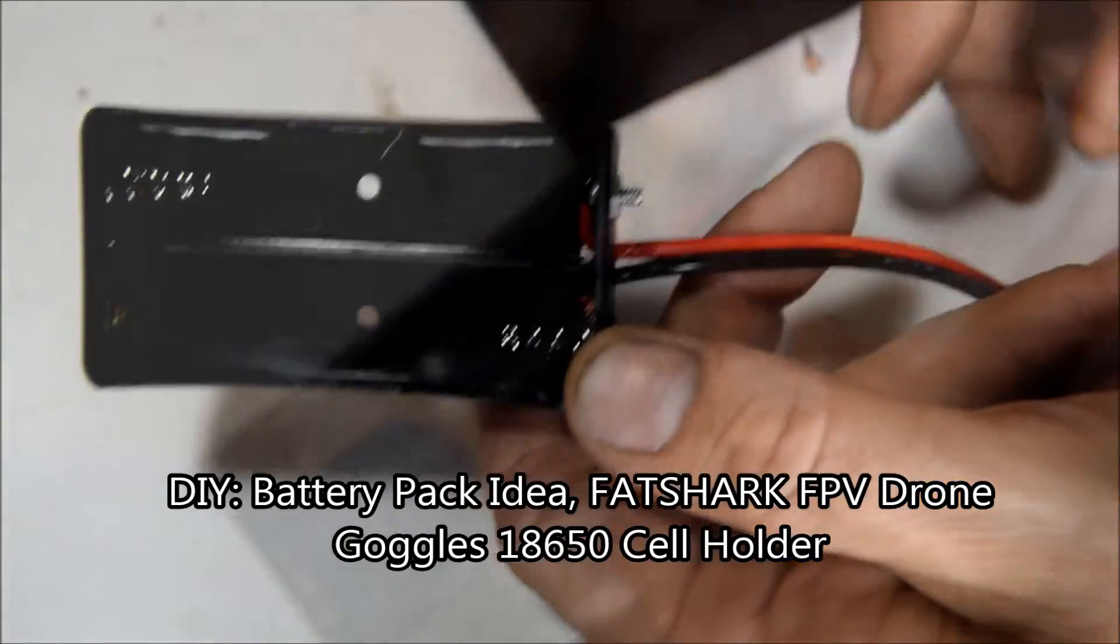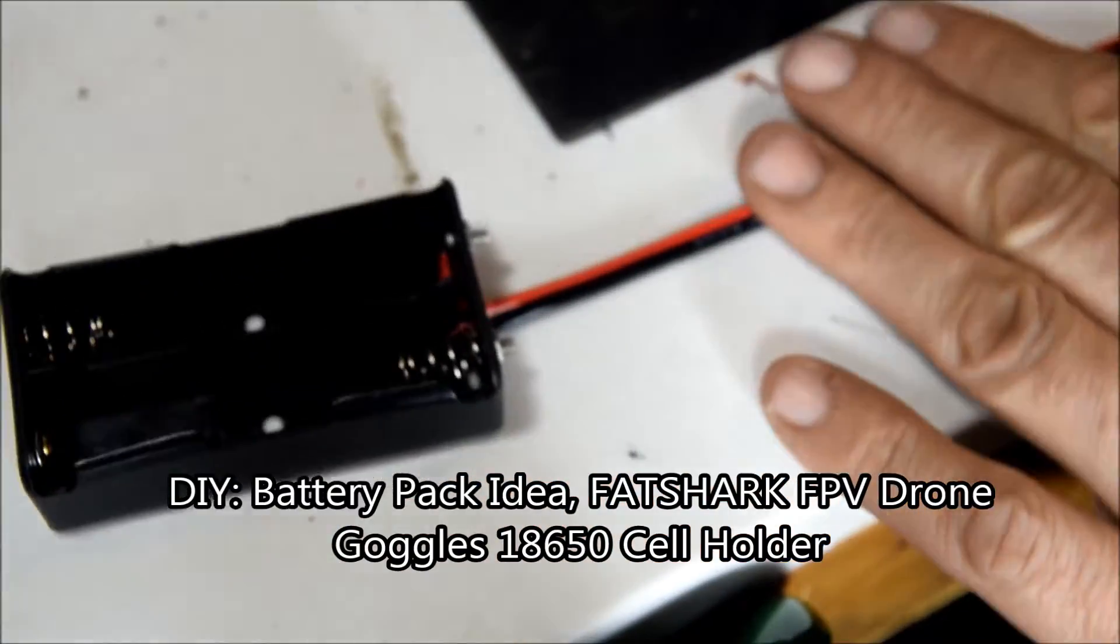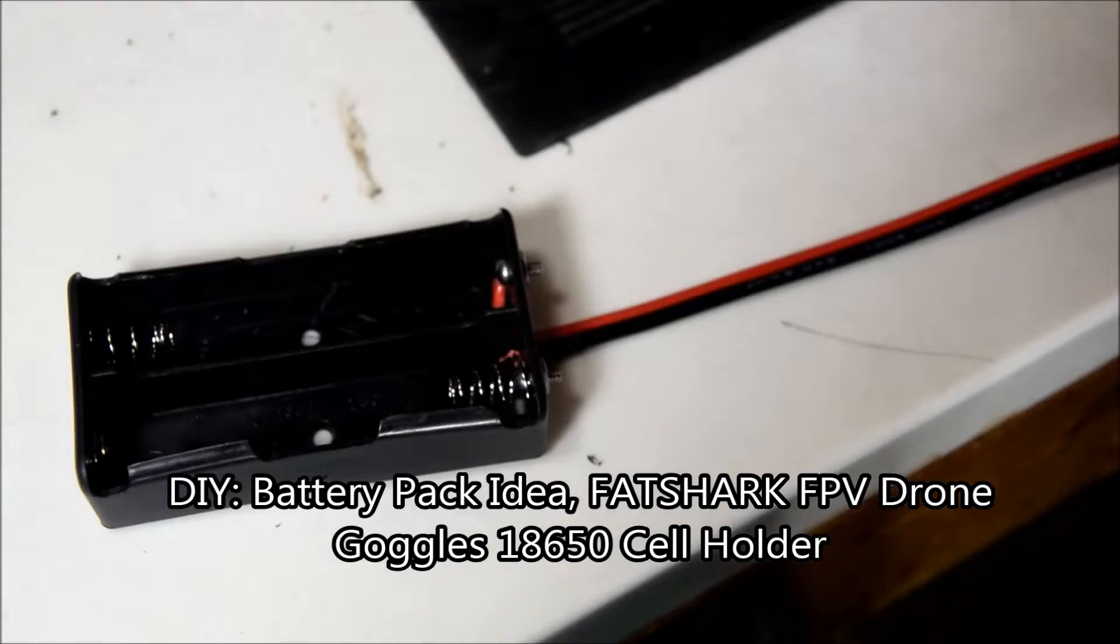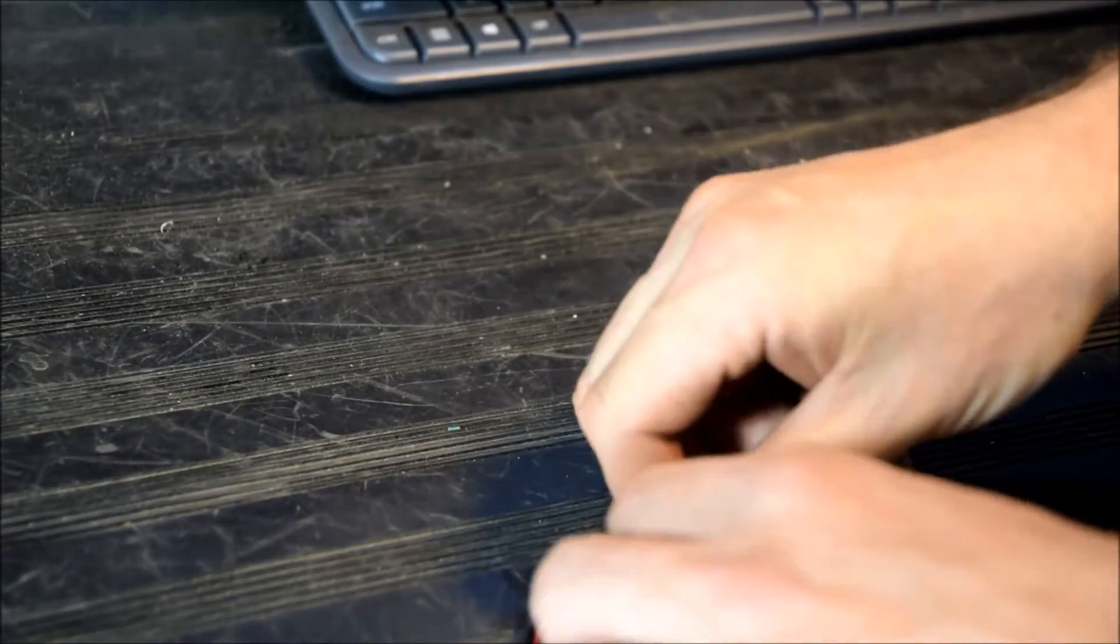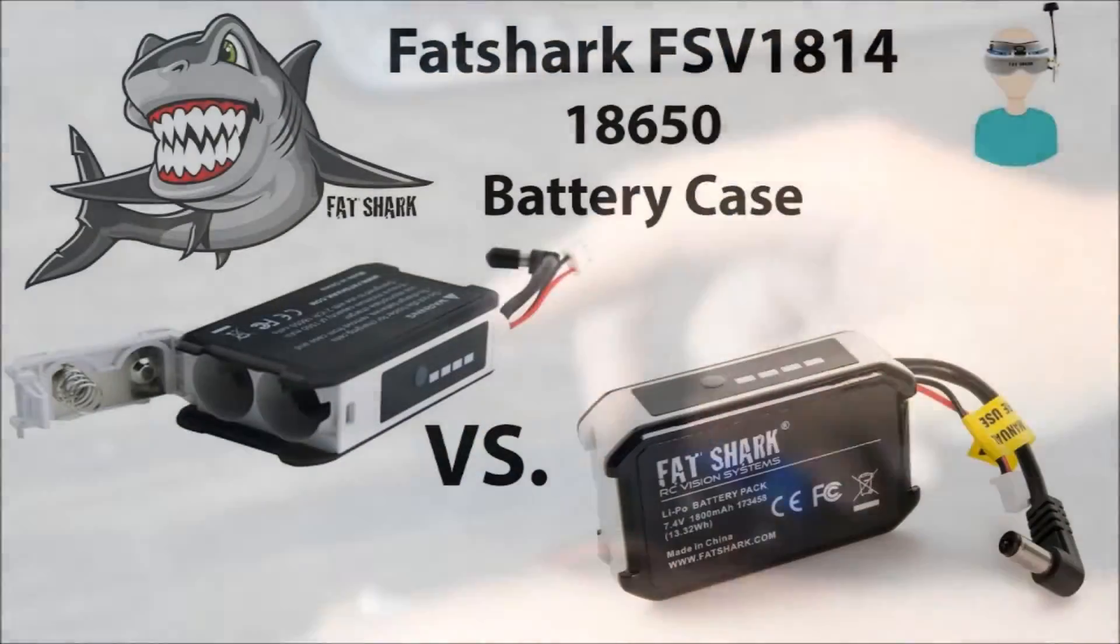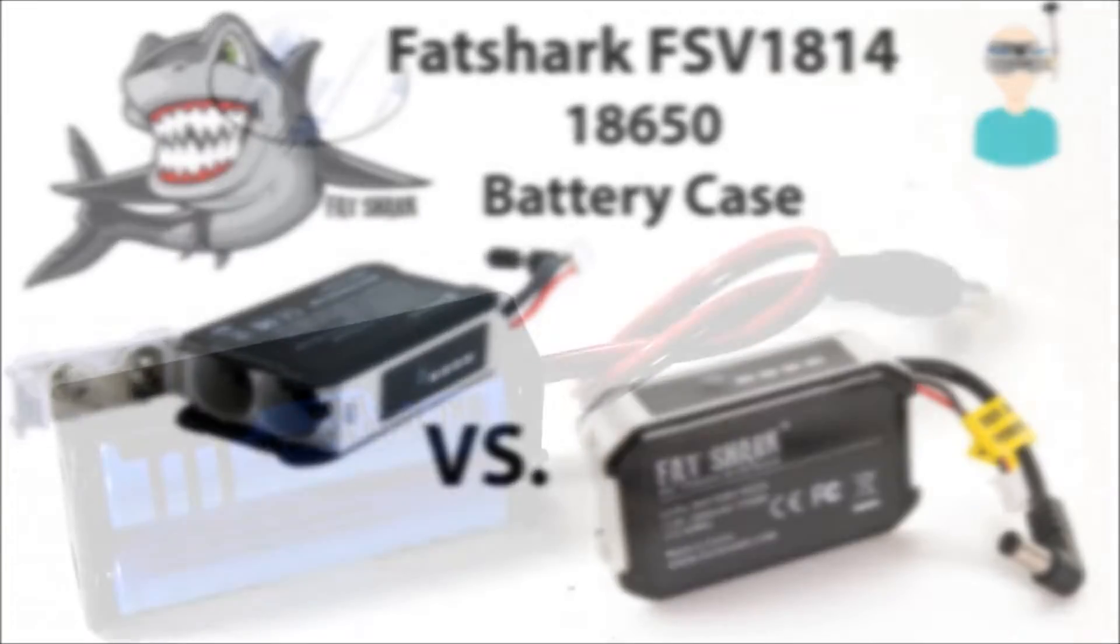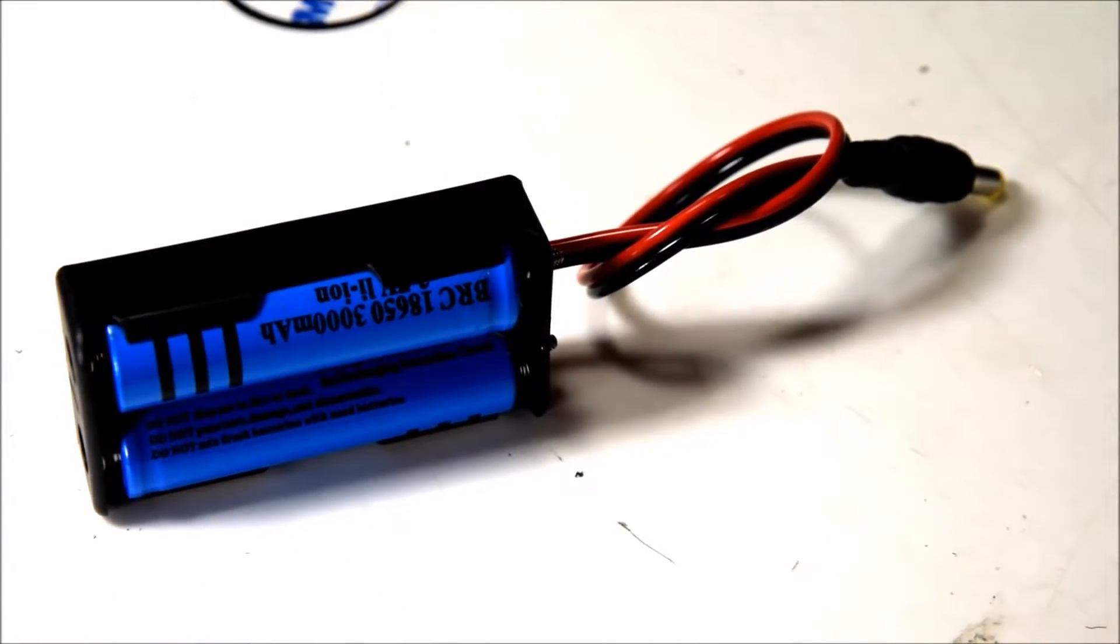In the FPV drone world, there's a company called Fat Shark and they manufacture video goggles. The same company also makes a lithium ion cell holder and sells it for $25. Now granted, that holder does have LED lights, but this is just a down and dirty cheap version of the same thing.